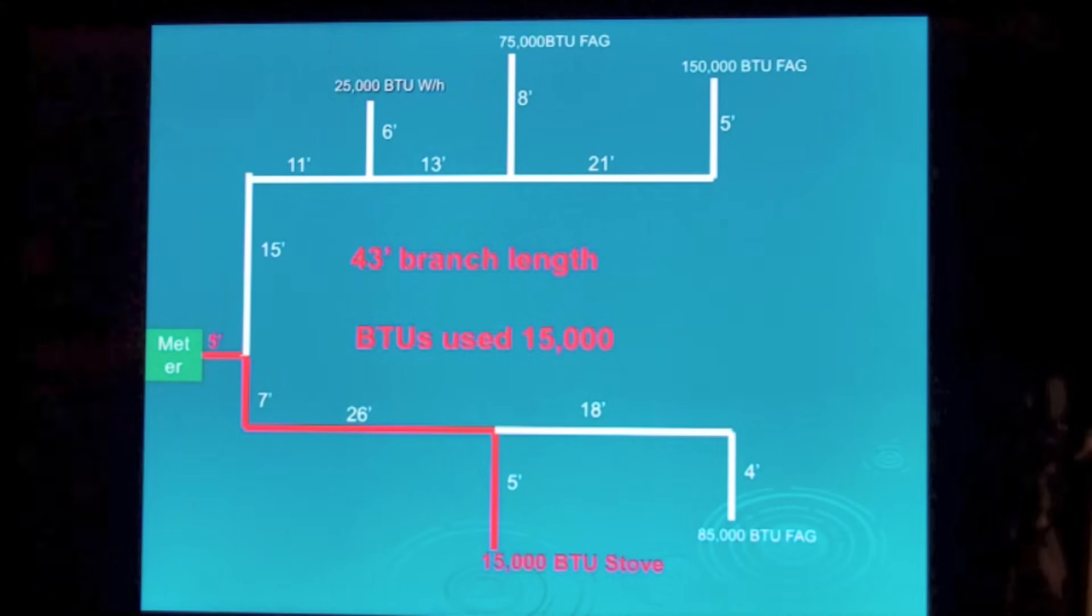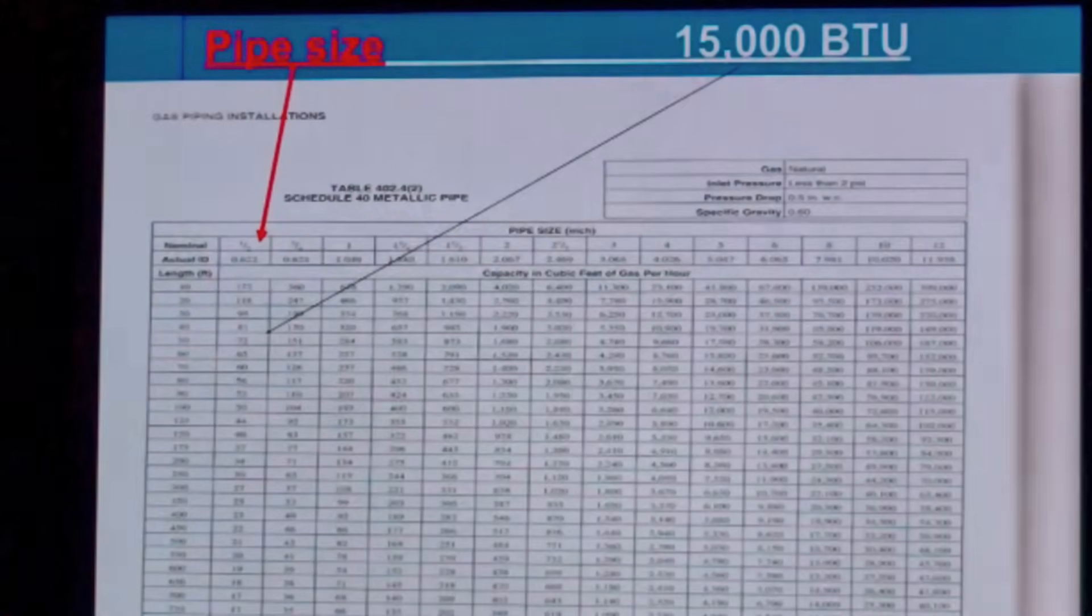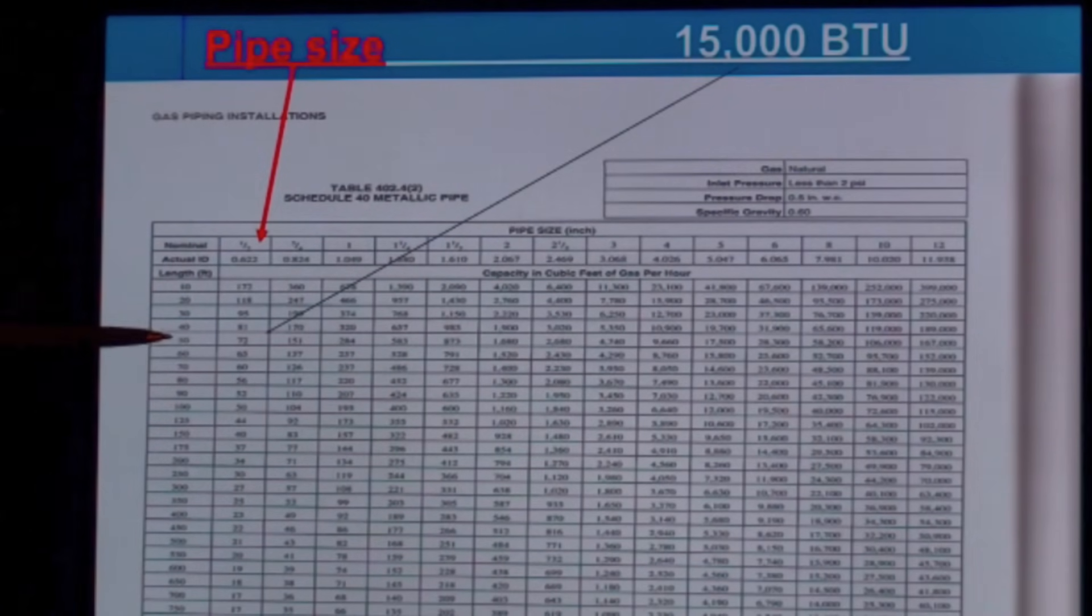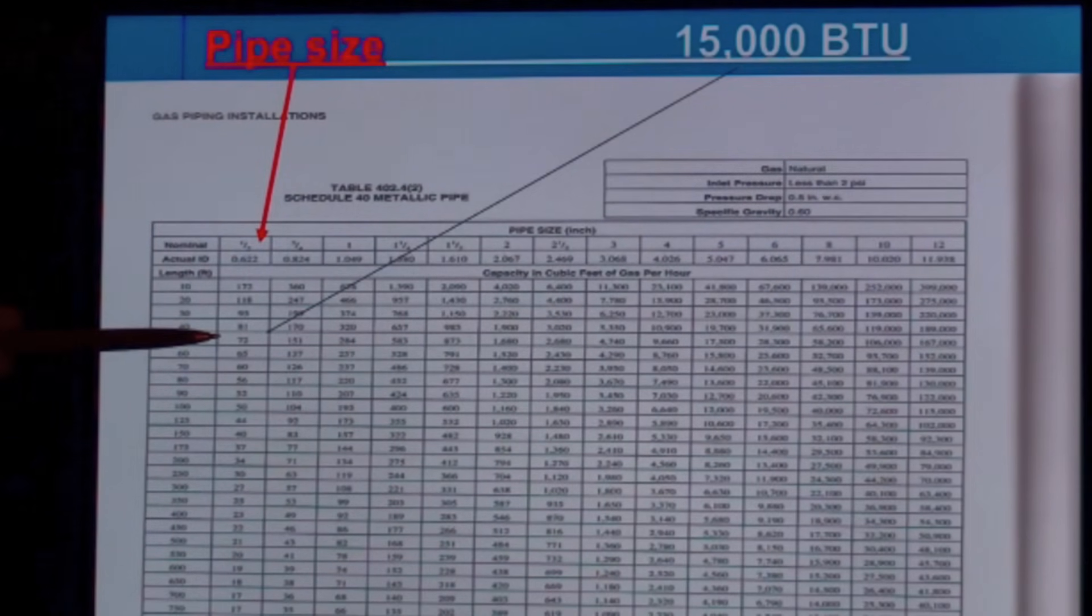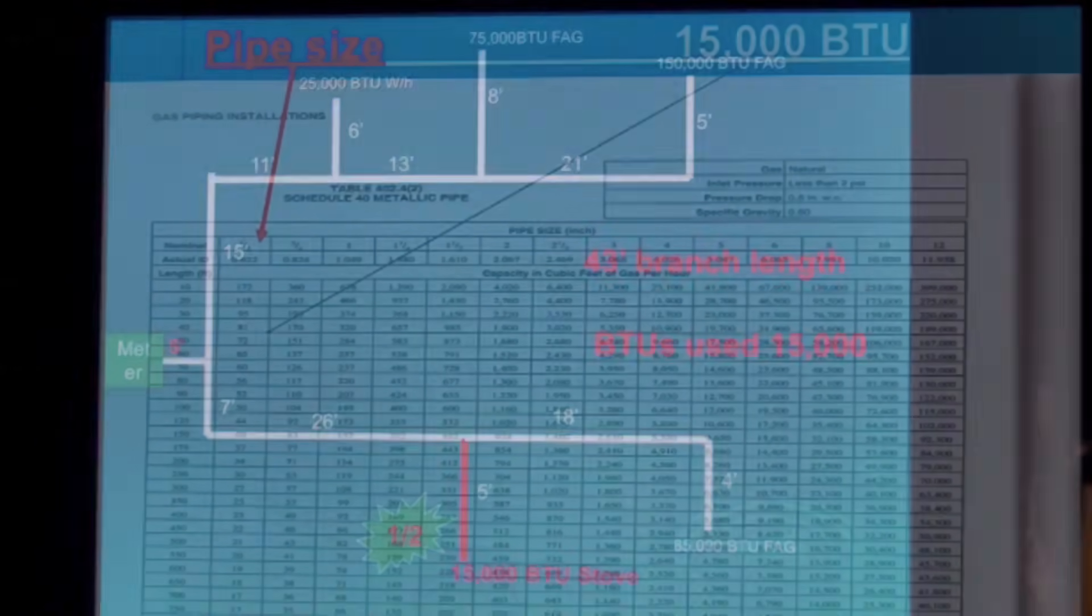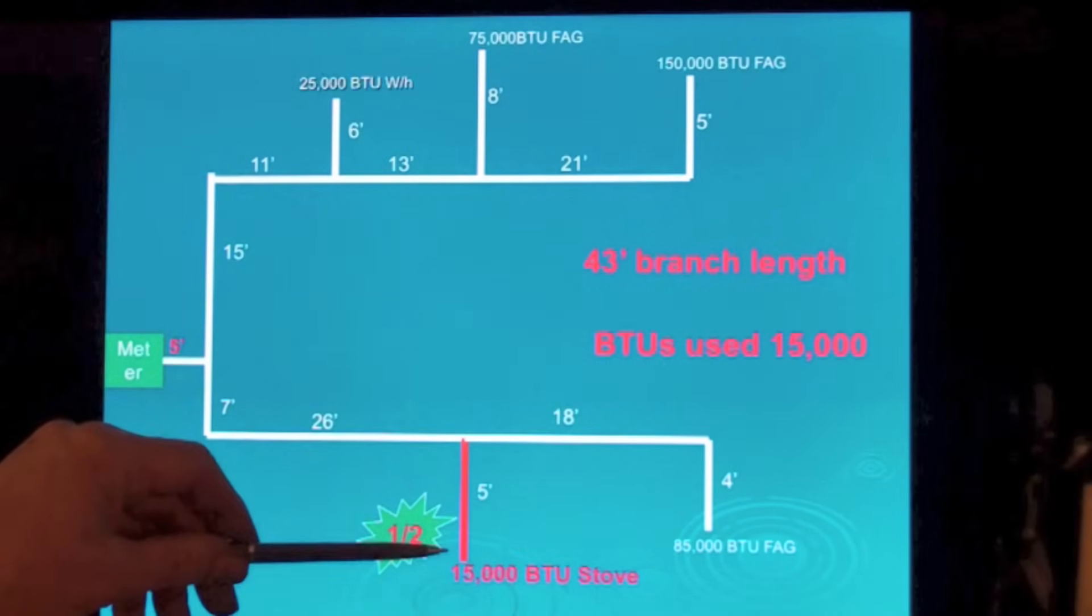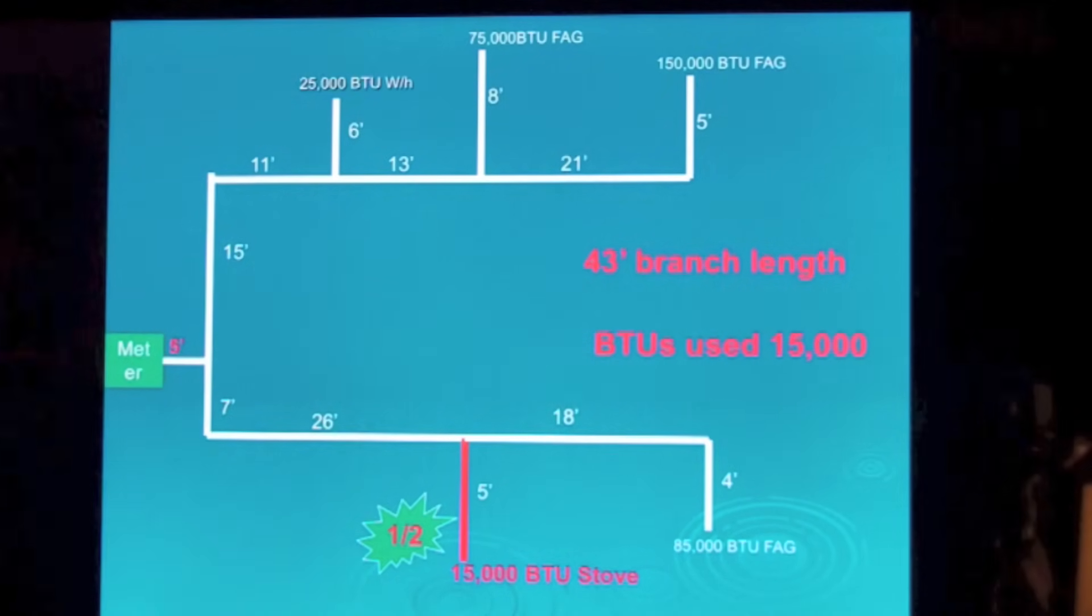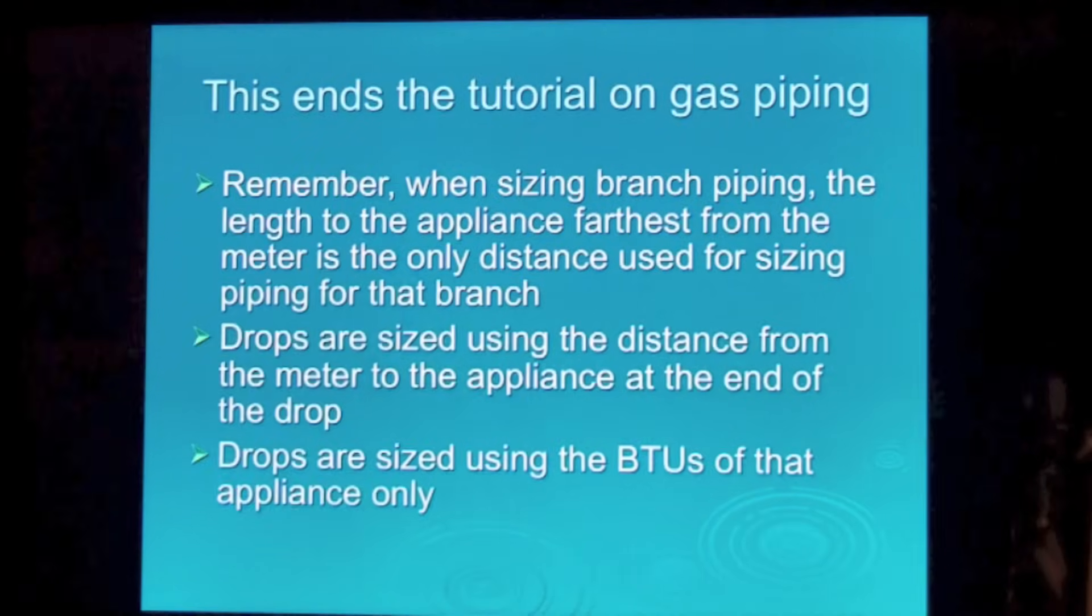Forty-three foot main branch or branch length, fifteen thousand BTUs. We're at forty-three, so we have to go to fifty. The half-inch pipe will do seventy-two thousand. We only have fifteen. So half-inch pipe. This piece here is half-inch drop.